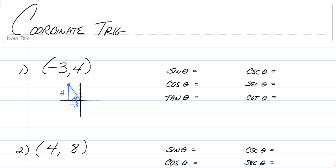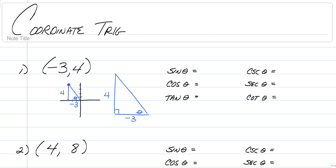Going left is negative, going up is positive, so we have negative 3 and 4. We have a right triangle with theta, negative 3 for the bottom, and 4, and of course that's our right angle. In order to do trigonometry where we're just writing ratios, we need all three sides, so you need to do the Pythagorean theorem to find the hypotenuse.